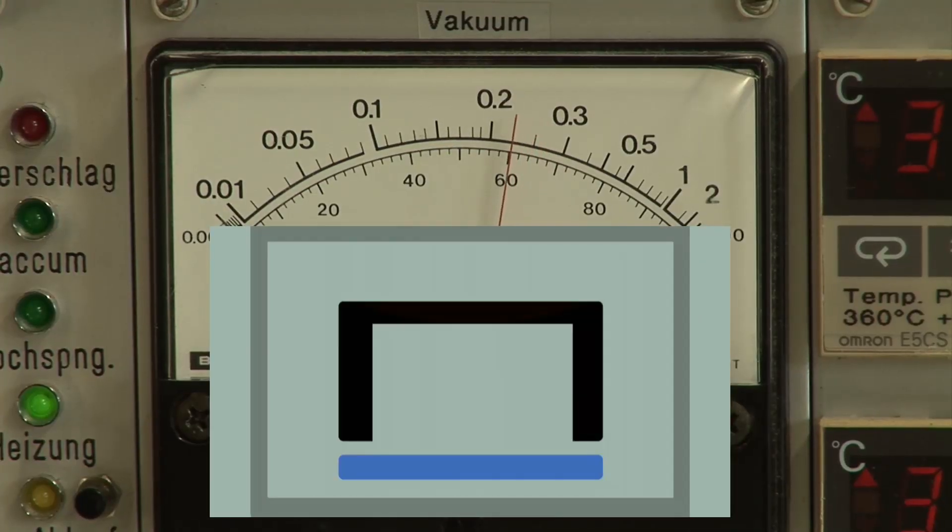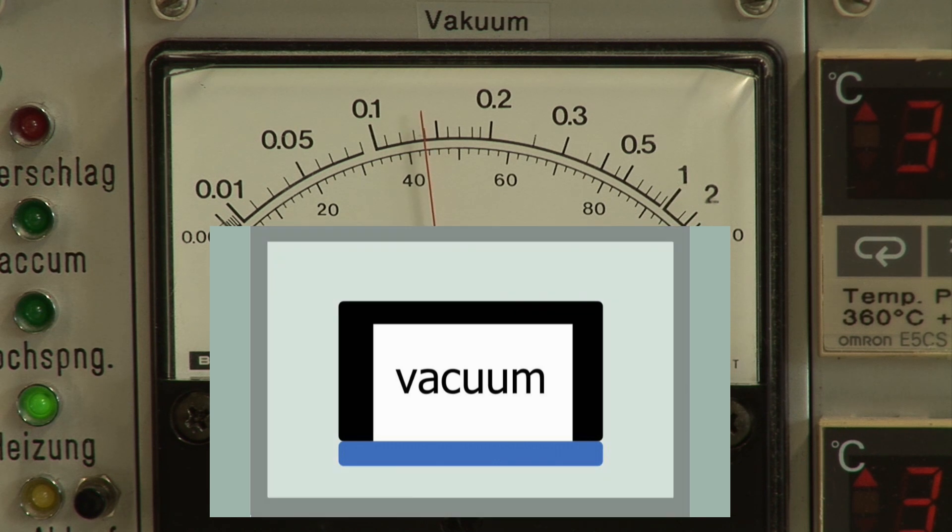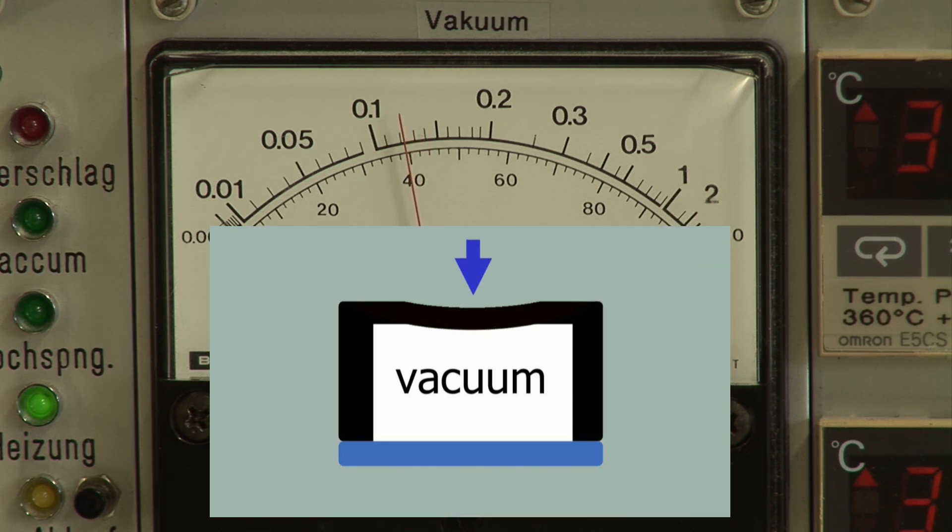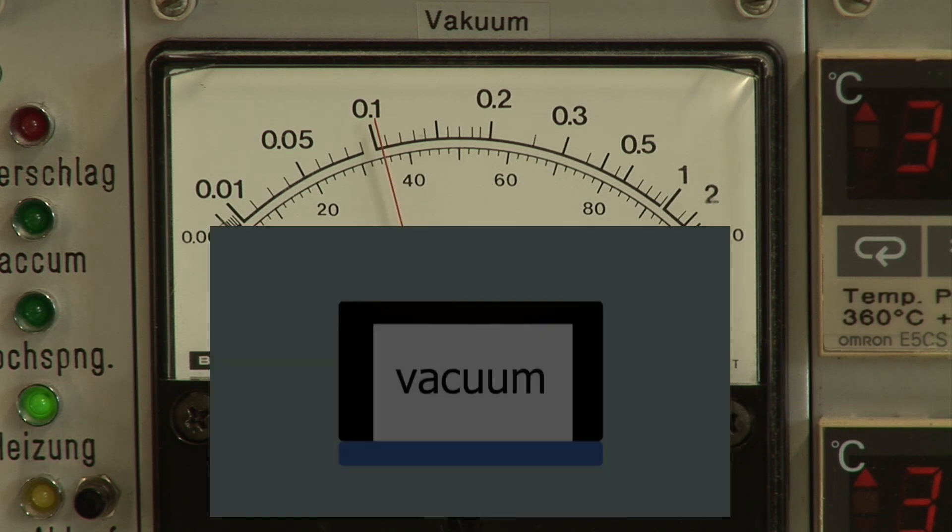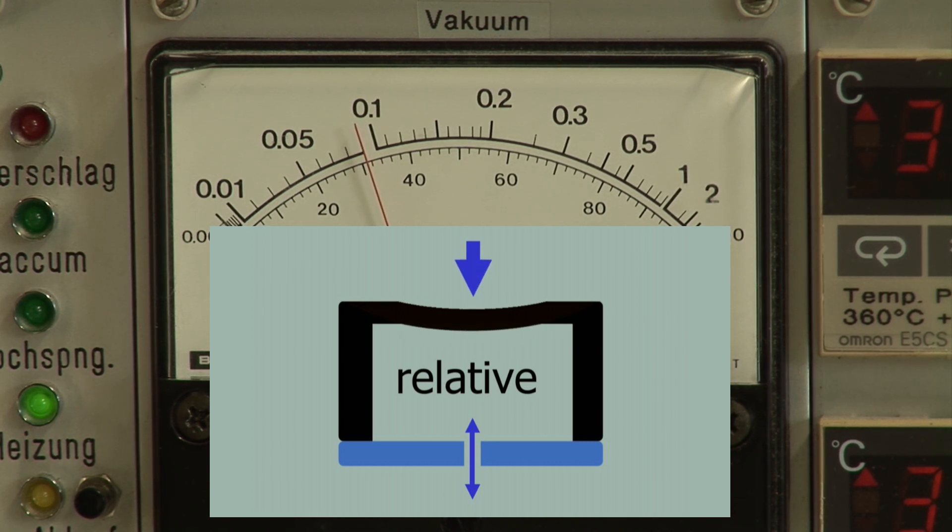With absolute pressure sensors, the vacuum is maintained in the cavity after bonding. This allows the sensors to measure barometric pressure, for instance. In differential pressure sensors, on the other hand, a hole is made in the glass for ventilation purposes. These sensors measure the pressure relative to their environment.